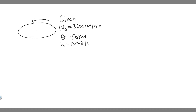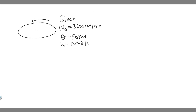We know it's going to rotate through a distance of 50 revolutions and then come to rest, so the final angular velocity is zero radians per second because it's not moving. We also know theta, or the angle which it turns, is going to be 50 revolutions. This is basically the information we're given, and what we want to do is solve for the constant angular acceleration, alpha.